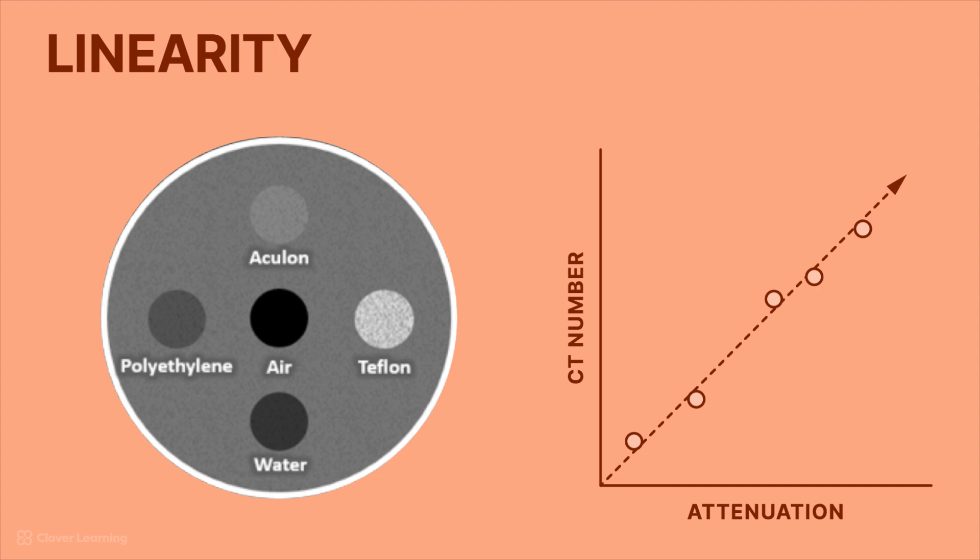And again, when we plot these numbers, it should form a line. And if it forms something other than a line, then we probably have a problem with linearity.